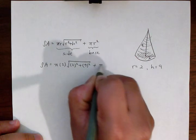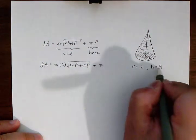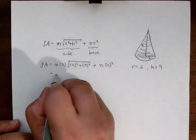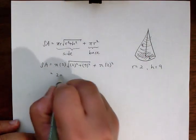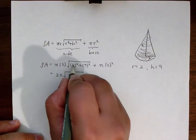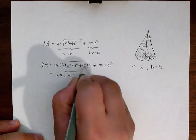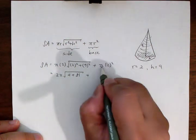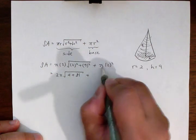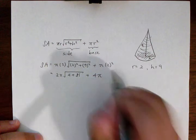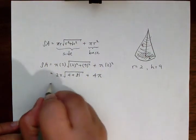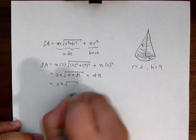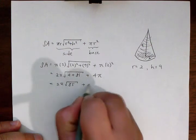We're going to clean this up a little bit. We'll write this as 2 pi square root of 4 plus 81, plus 4 pi. So what we have is 2 pi times the square root of 85 plus 4 pi.